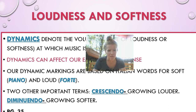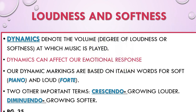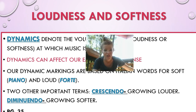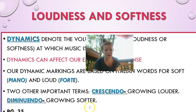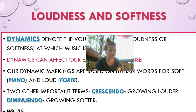We have a few Italian words. We have piano, which means soft, and forte, which means loud. Just like with our tempo, we need words to describe getting louder and getting softer. Crescendo means gradually getting louder, and diminuendo means growing softer. Great — we have all of those terms down.